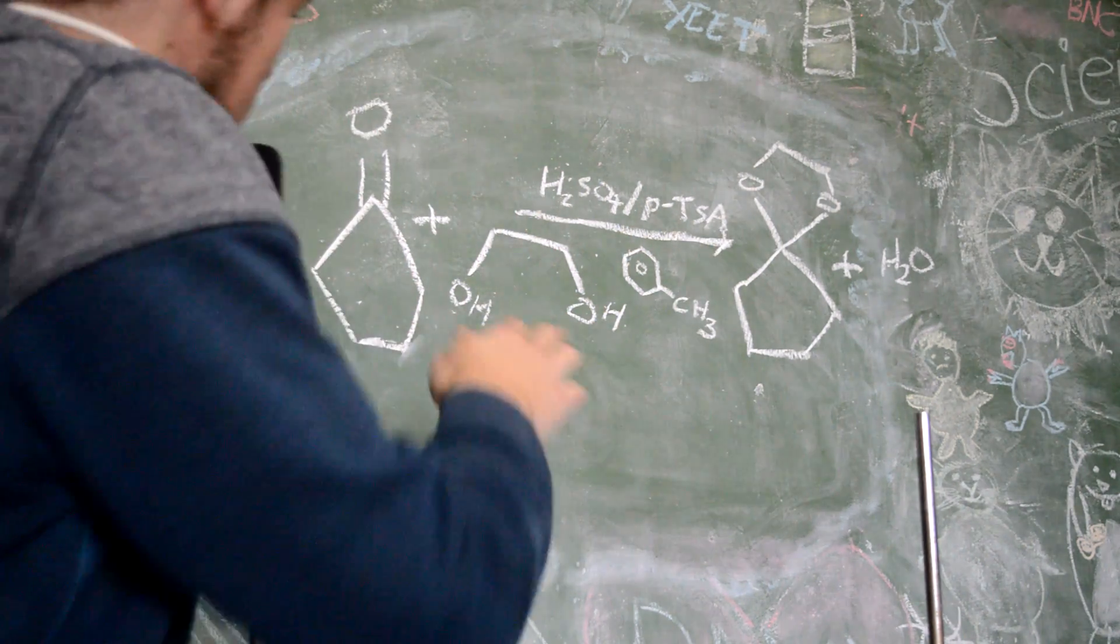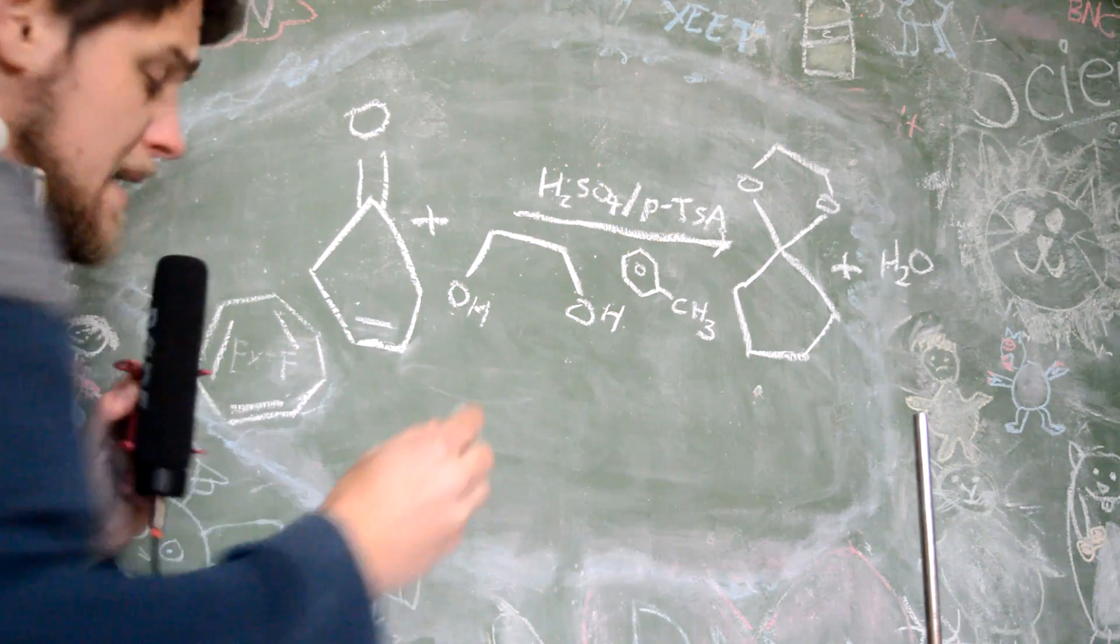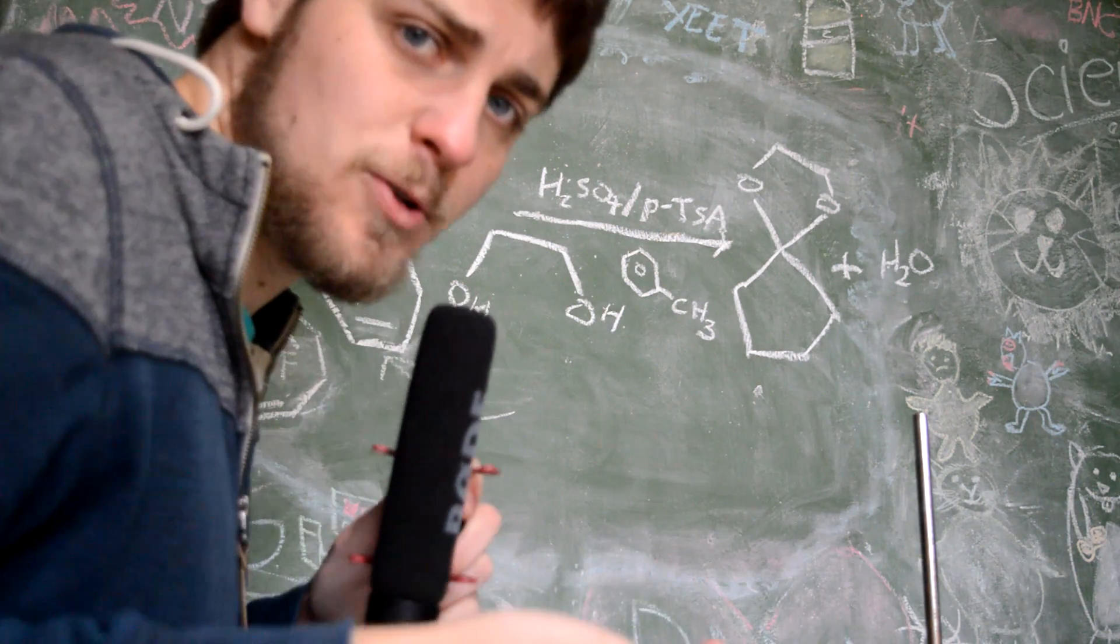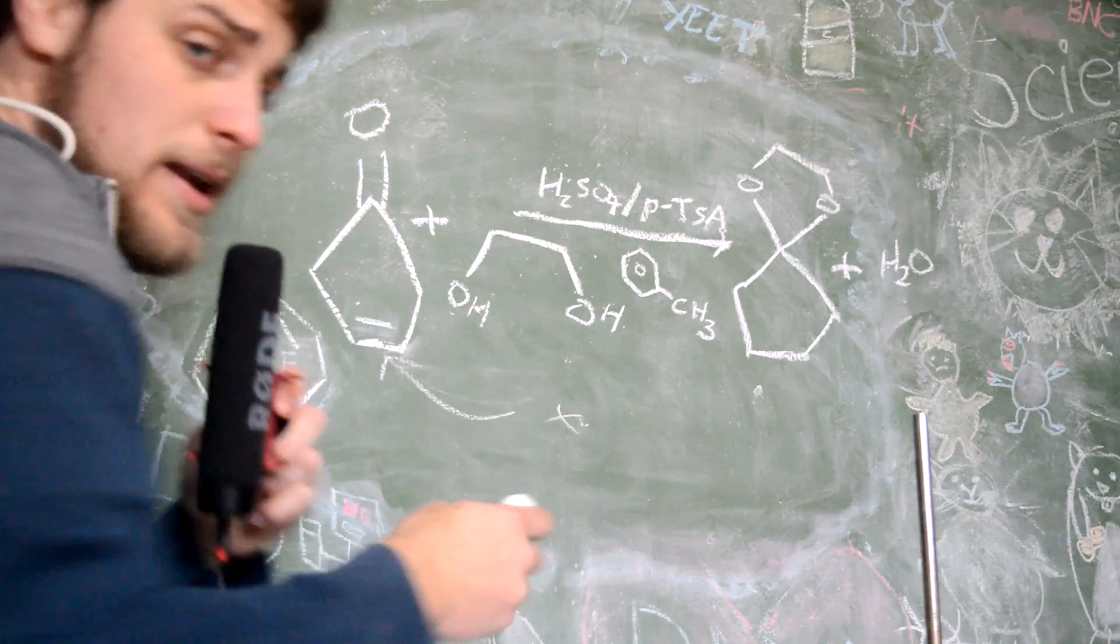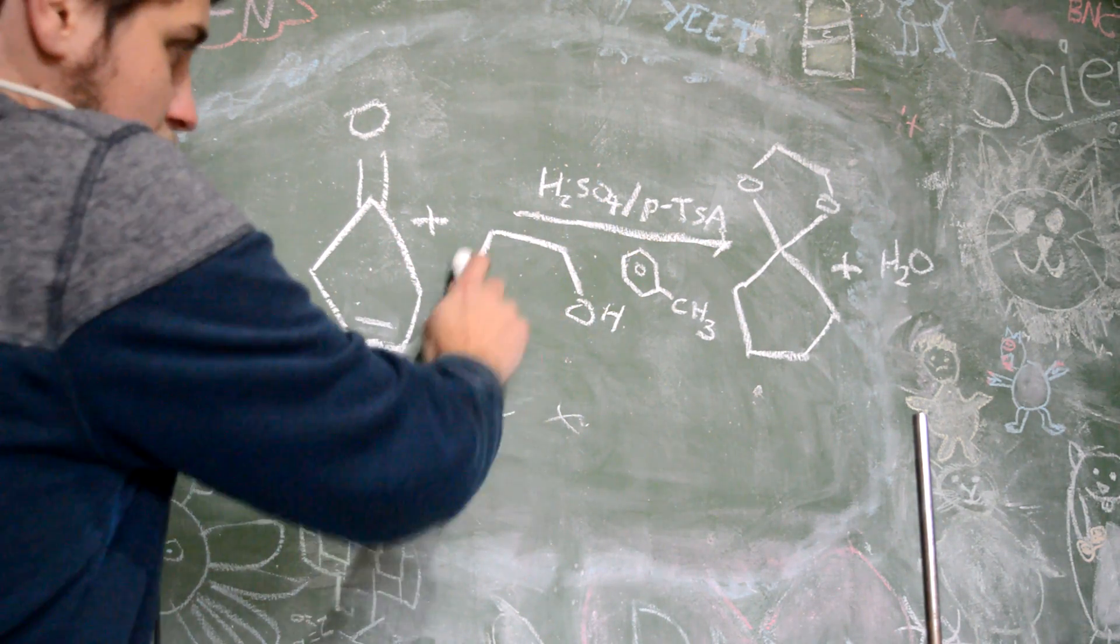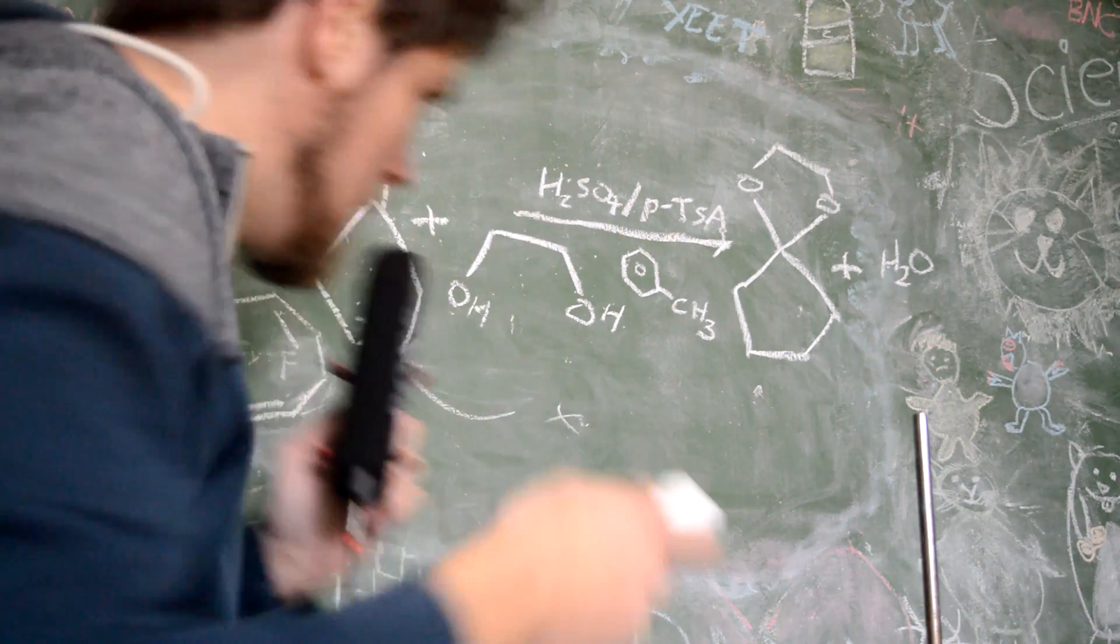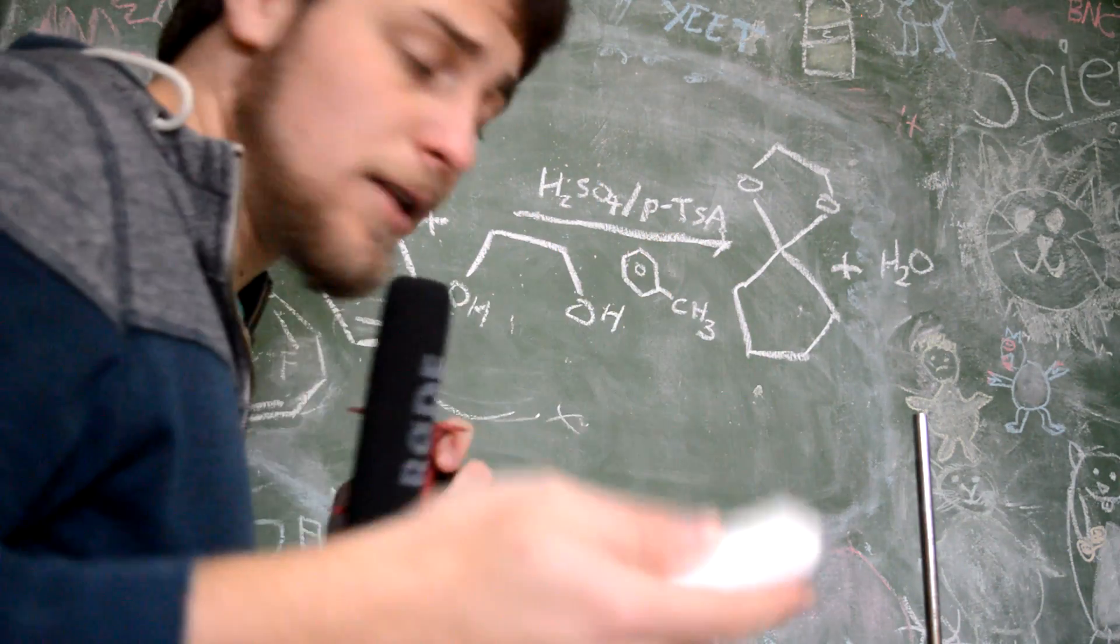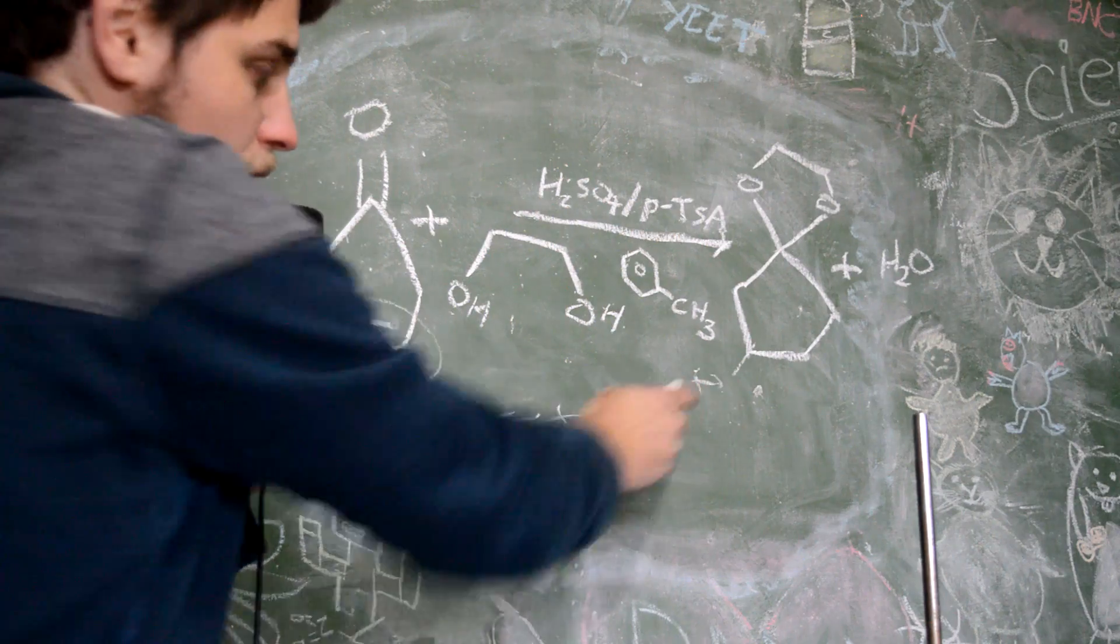This is a reasonably common reaction because it's kind of a protecting group. Say you had this molecule and you had a double bond here, and you wanted to do some chemistry to add some group. You're going to have trouble because that ketone group is going to react first because it's more reactive. So you can put this protecting group on there, form that ether, then you can do the reaction on the other group because this won't react.